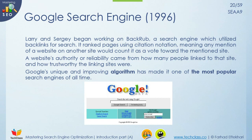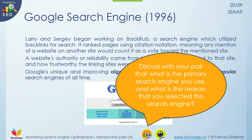Then in 1996 we had Google's search engine. Larry and Sergey began working on Backrub, a search engine that utilized backlinks for search. It used to rank pages using citation notation, meaning any mention of a website on another site would count as a vote toward the mentioned site. After that, Google became the most popular search engine. You can also discuss with a peer what primary search engine you use and what features you use from it.